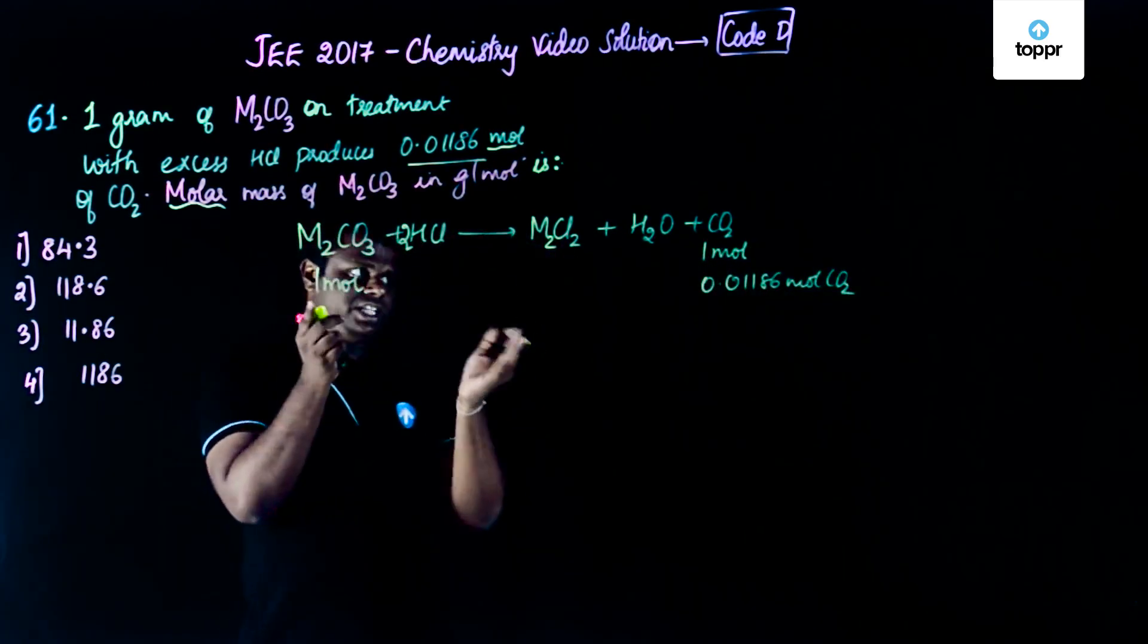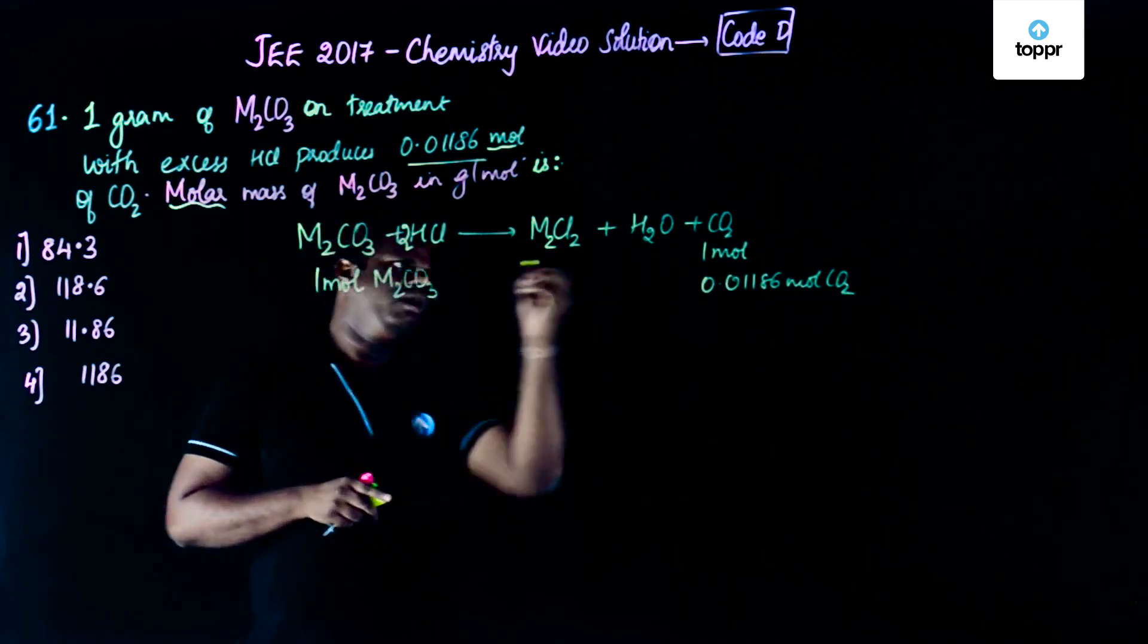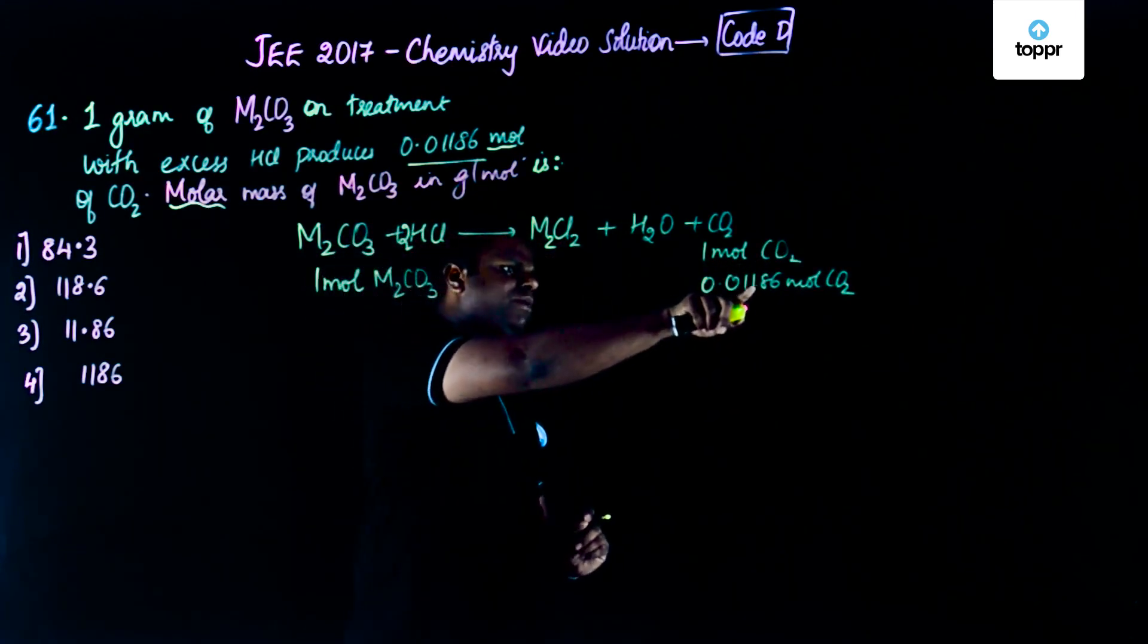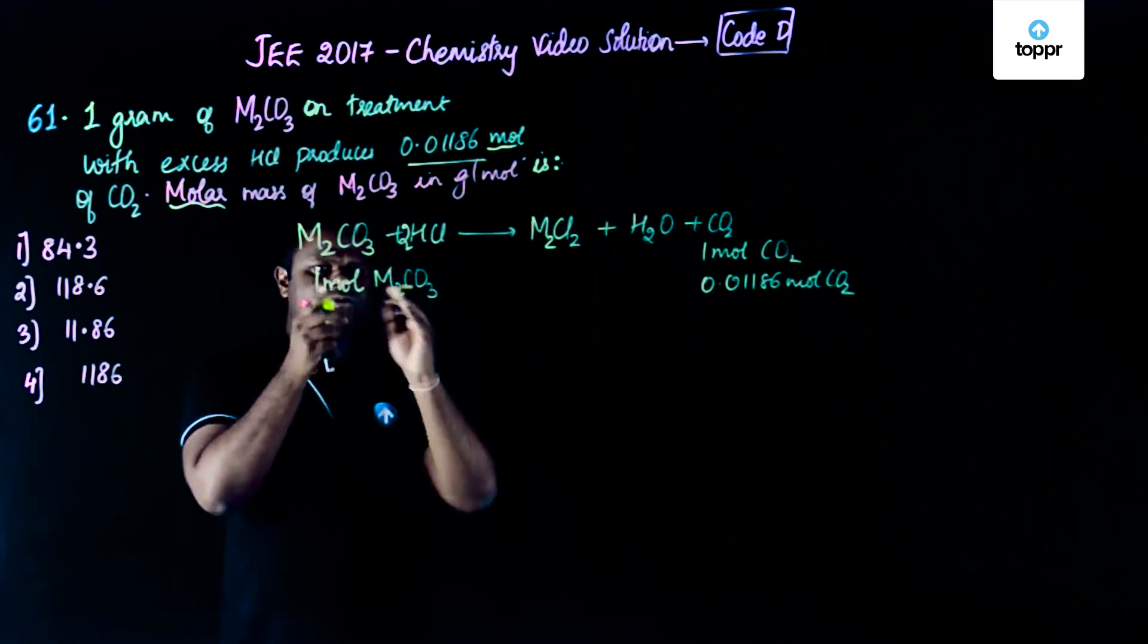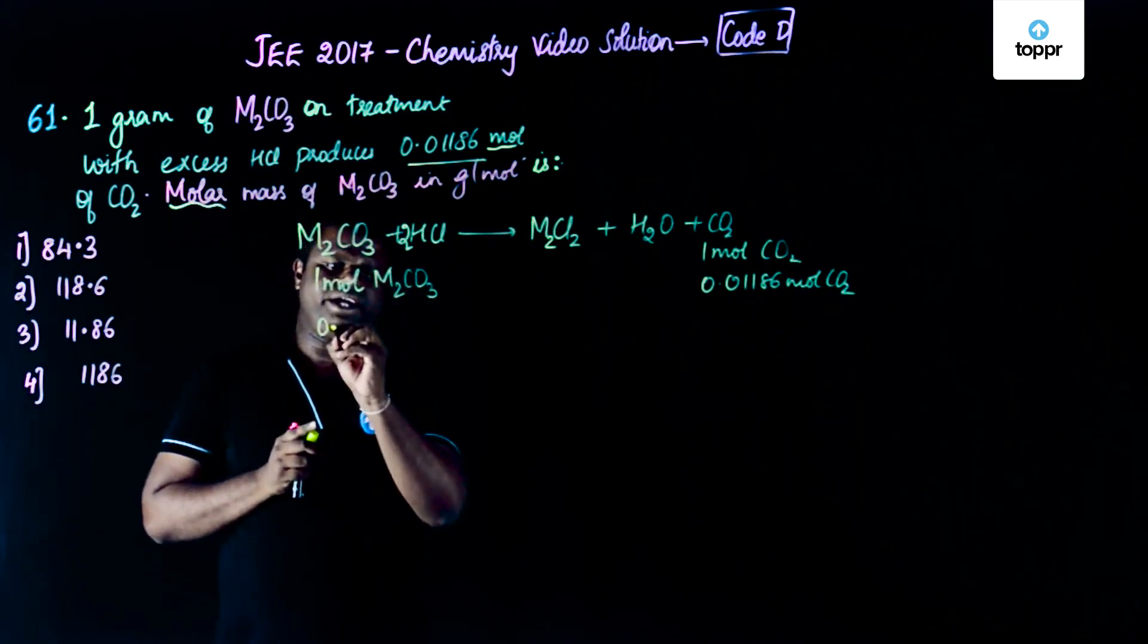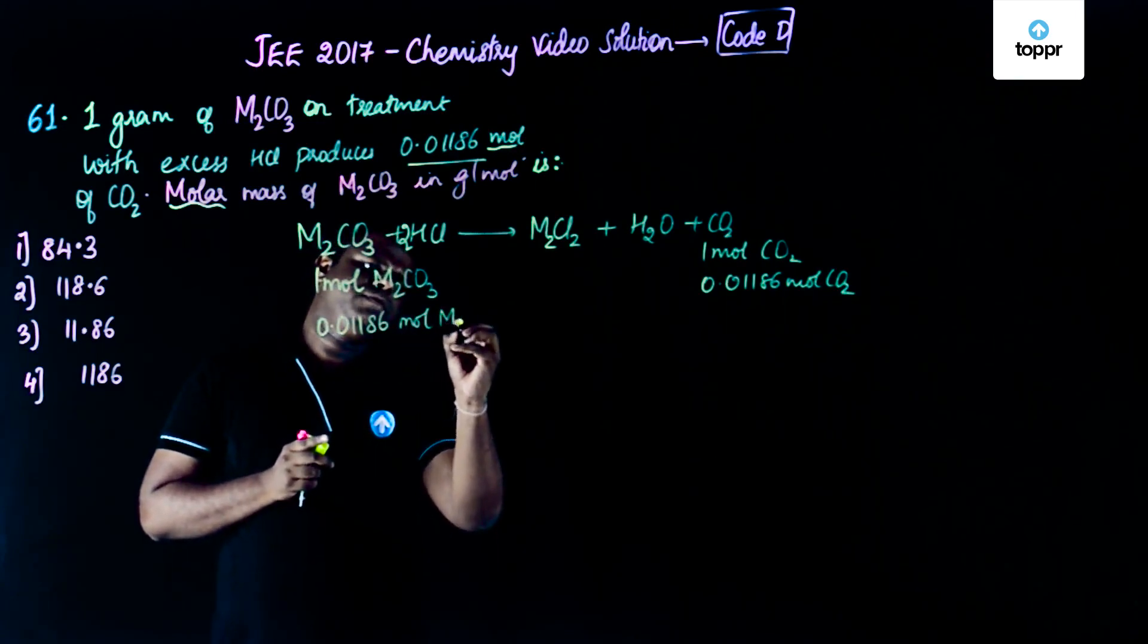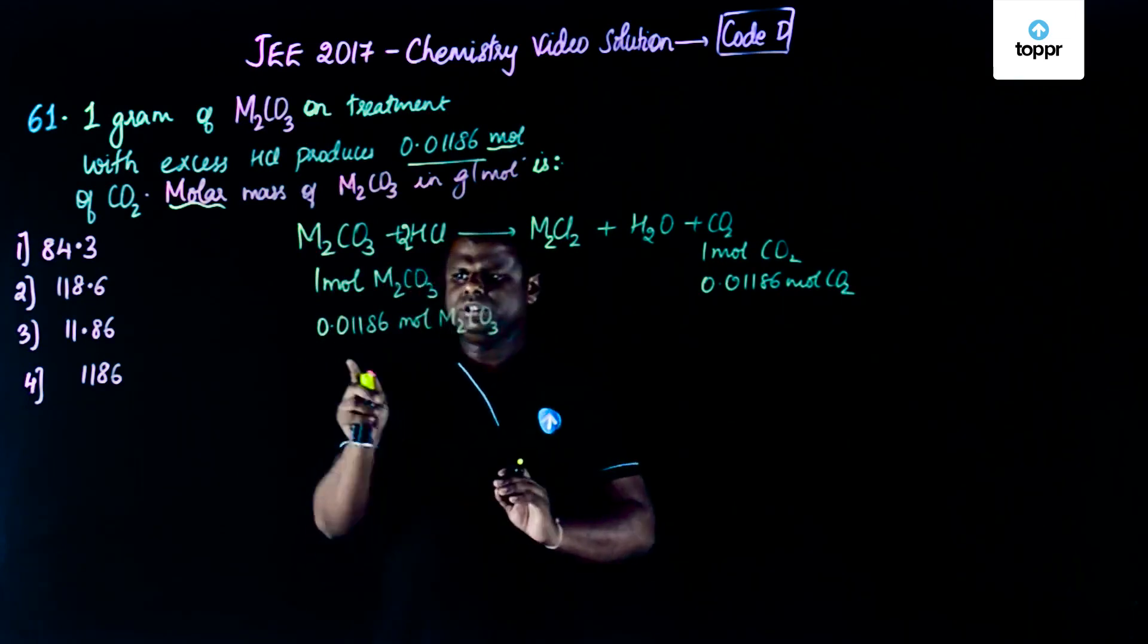So if you could write the correspondence equations: one mole of M2CO3 corresponds to one mole of CO2. So that means 0.01186 moles of CO2 would be from 0.01186 moles of M2CO3, correct. I hope this makes sense. This is the equation which we are going to use.